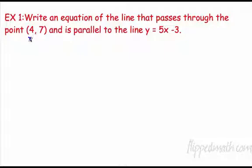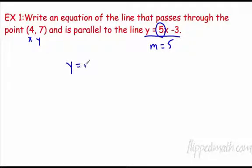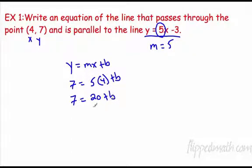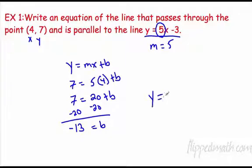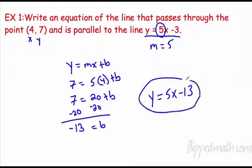Write an equation of the line that passes through the point (4, 7) and is parallel to the line y equals 5x minus 3. Any line parallel to this will have the same slope, so our slope is 5. Using y equals mx plus b: plug in — 7 equals 5 times 4 plus b, so 7 equals 20 plus b. Subtract 20 from both sides: b equals negative 13. So y equals 5x minus 13. Same slope — same slope.